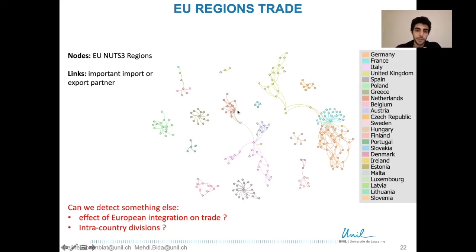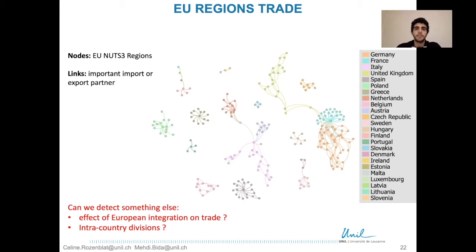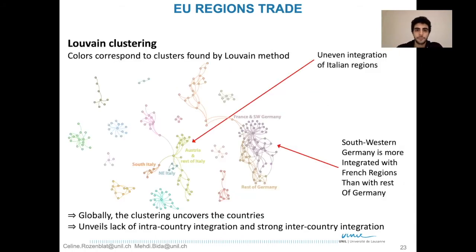Visually it looked like a good clustering, but the question is: if we apply a clustering algorithm, can we detect some unexpected patterns that countries would not reveal? For example, could we see some effect of European integration on trade, or some lack of cohesion within countries? Here we applied Louvain clustering on this network.